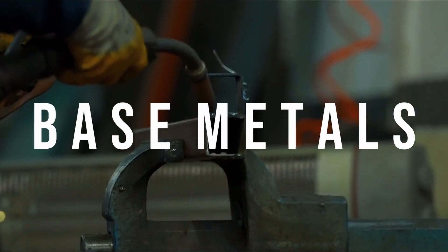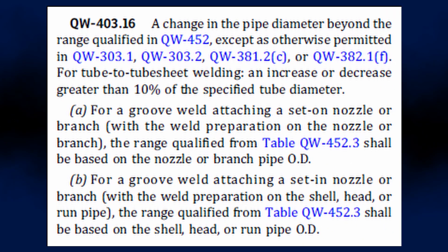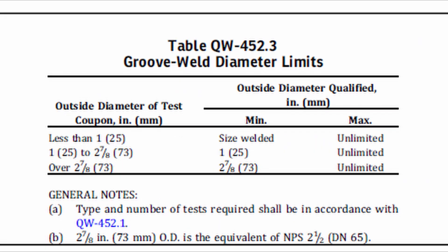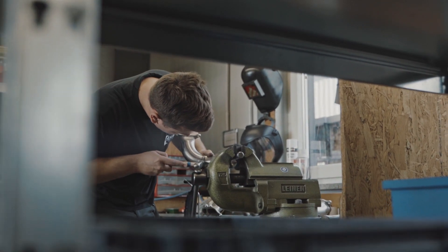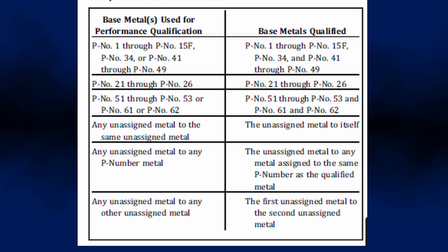Under base metals, the pipe diameter is one example of an essential variable. QW-403.16 mainly refers the qualification to QW-452.3, which shows there is no maximum limit in terms of the diameter of the pipes that the welder can be qualified for. For P numbers, similar to qualifying procedures, a change in P number will require re-qualification of the welders. However, QW-423 provides information on the range of base metals the welder will be qualified for when qualified with a certain group of base metals.